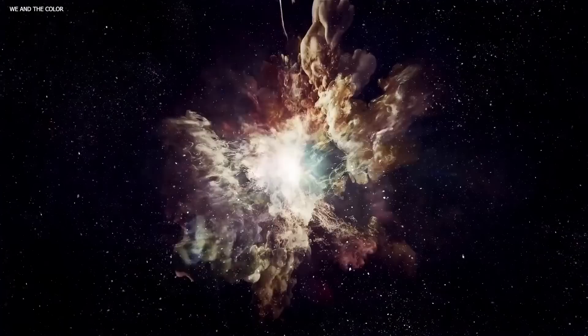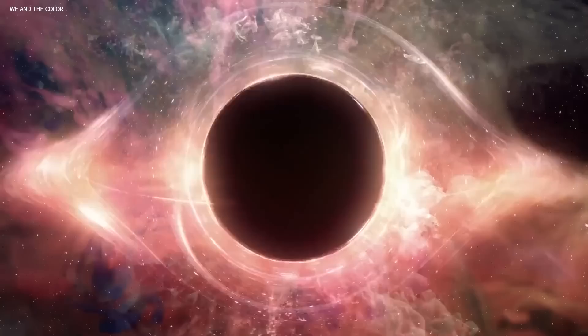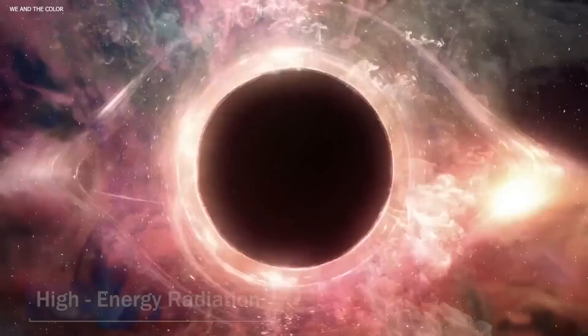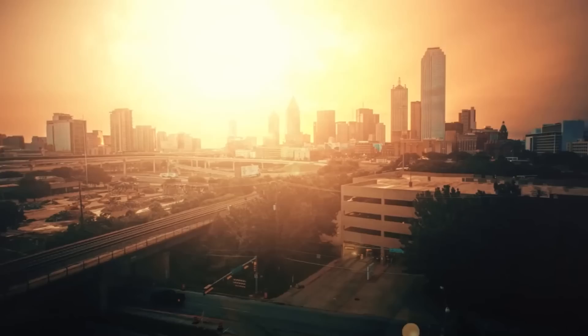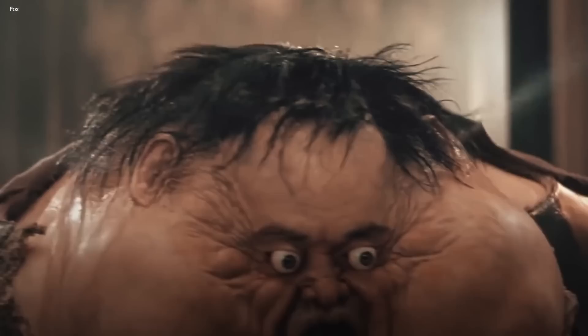One of the primary dangers of supernovas is the release of high-energy radiation. When a supernova occurs, it releases a burst of gamma-ray radiation that can be thousands of times more powerful than the energy emitted by our sun in its entire lifetime. This radiation can be deadly to life on Earth. It's so powerful that it can literally damage DNA and other biological molecules and break down the building blocks of life as we know it.